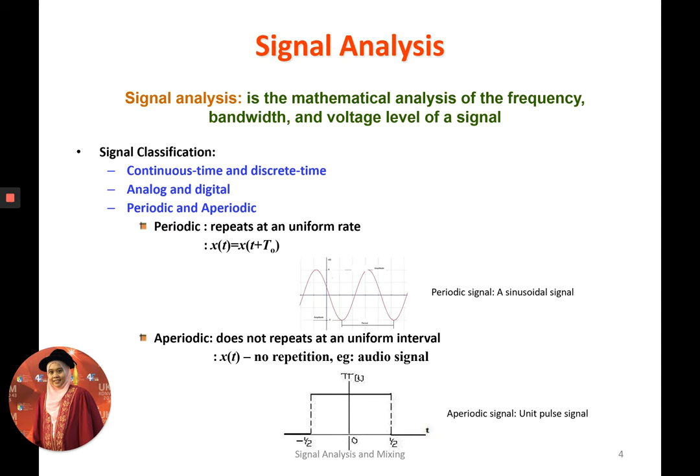For periodic, the signal will repeat at a uniform rate at the same period of time. But for the aperiodic, it does not repeat the same signal, the same shape at the uniform interval or uniform time period.